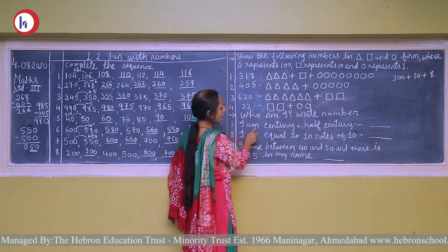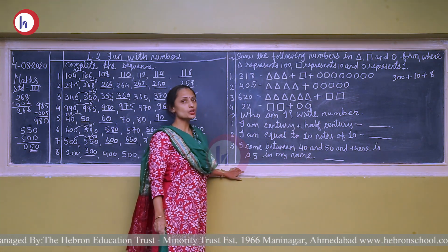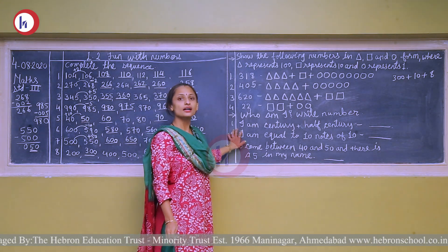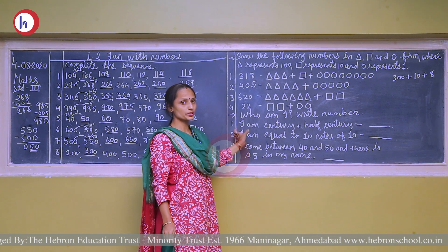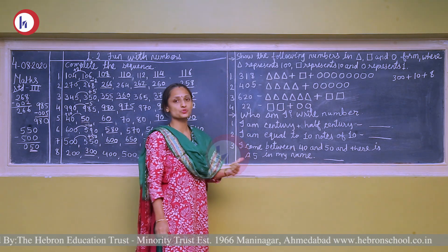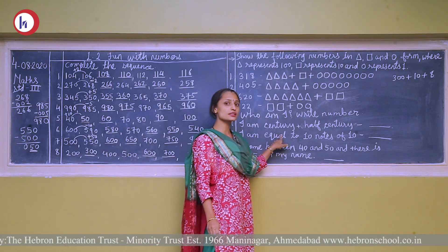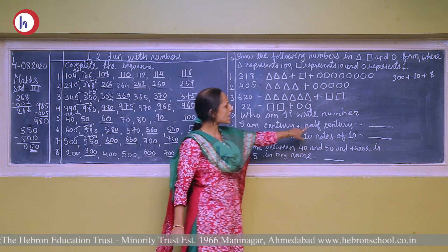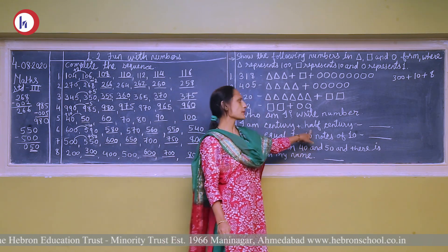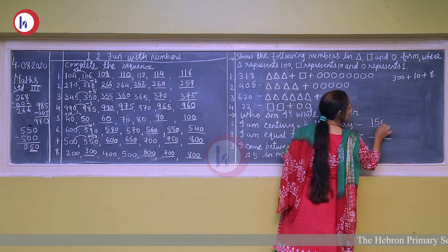First: I am a century plus half a century. Century means one hundred, and half means fifty. So one hundred plus fifty — the answer is one hundred and fifty.